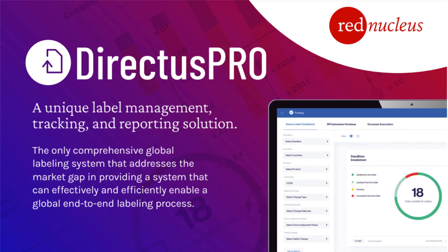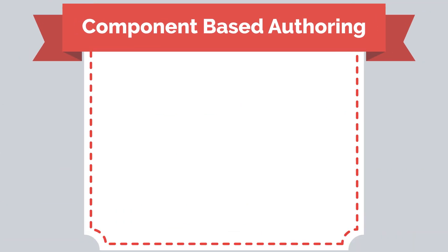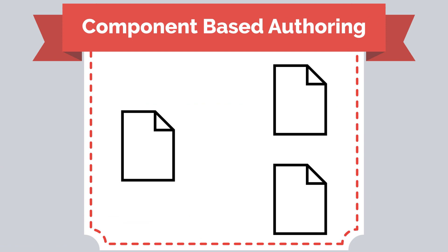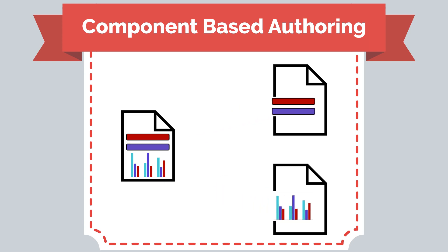Directus Pro is an intuitive end-to-end labeling solution with a unique approach to structured content and component-based authoring. Component-based authoring is an advanced document processing functionality that can decompose text, data, and other content into reusable components that can be managed and assembled into target destinations.